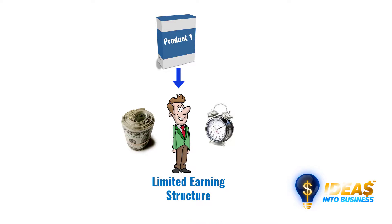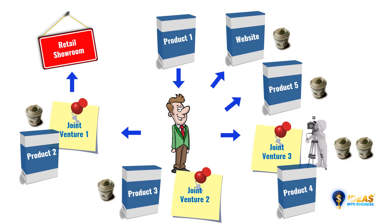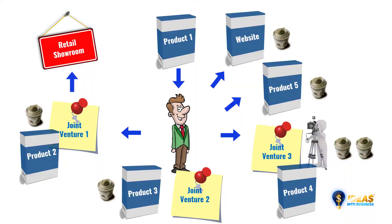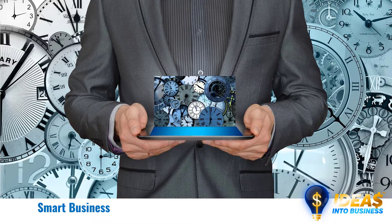So if we compare his original structure of one product and one revenue stream, where his entire business was dependent on him and his time, and compare this to his new business structure — where he now has multiple revenue streams adding profits to his business daily, and they are not dependent on his time — this is an unlimited earning structure. This is smart business. This is how he went from struggling for many years to increasing his sales to $25,000 a month after just six months.